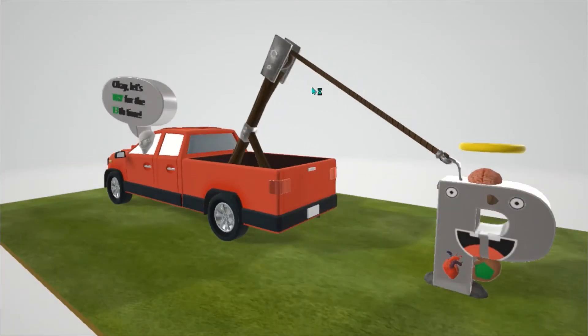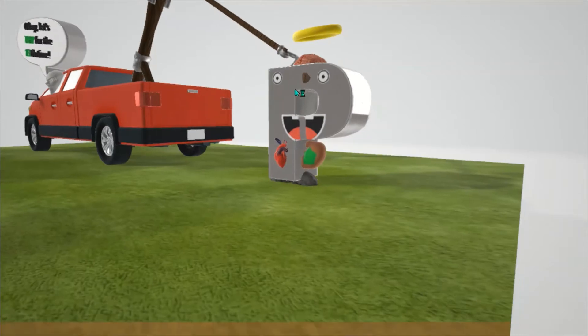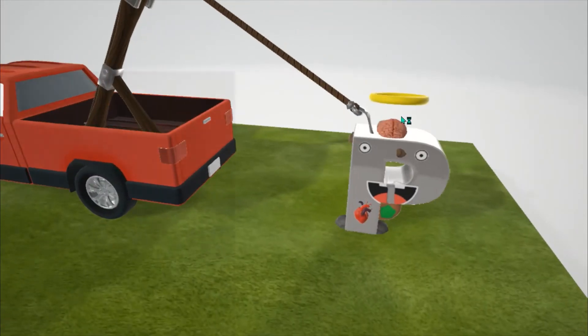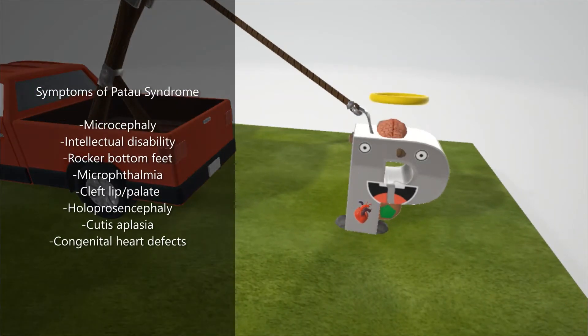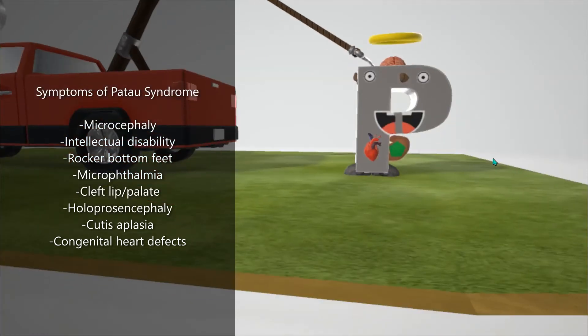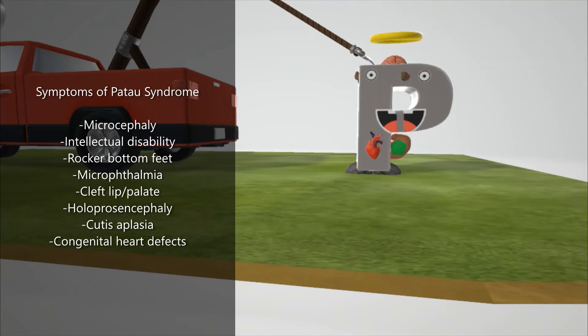The pea is going to help us remember the symptoms associated with Patau syndrome. The first thing we note is the small little brain on top to help us remember the microcephaly, which comes along with severe intellectual disability. He also has rocks as his feet to help us remember the rocker bottom feet.